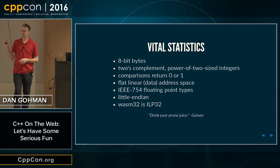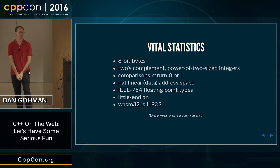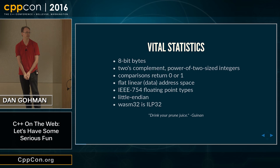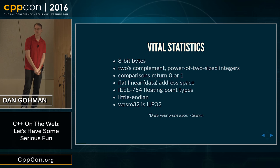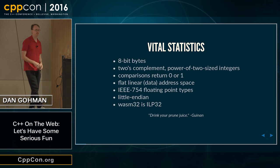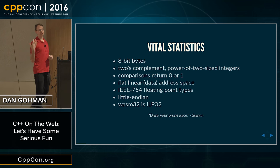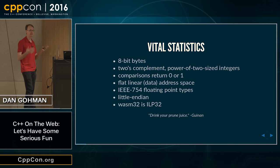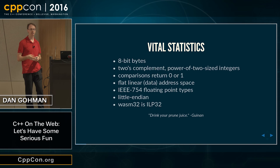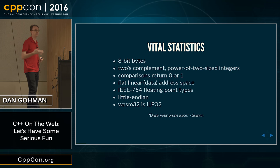I want to call out in particular IEEE 754 floating point. WebAssembly has float and double as single and double precision, and the floating point is actually fully deterministic. So if you've heard of other systems having problems with x87 rounding differently in different cases, WebAssembly does not have that problem. We define x87 to not be the correct rounding mode, and we do have tests for this — it's the IEEE rounding modes for single and double precision.